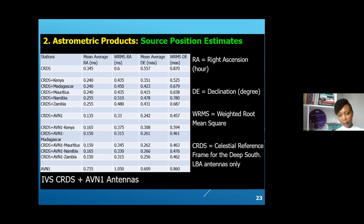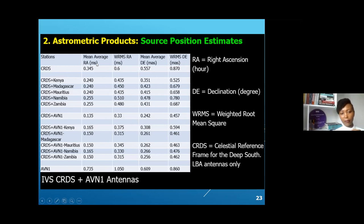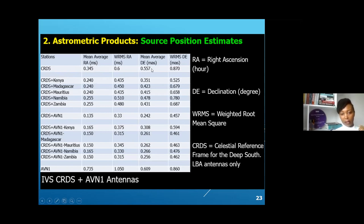The third objective was to estimate source positions, looking at the Southern Hemisphere. We examined the CRDS — the Celestial Reference Frame for the Deep South — observed using the LBA. The mean average errors in RA and declination with CRDS only are 0.345 and 0.57. Adding AVN-1 antennas improves these to 0.135 and 0.242 respectively. Clearly, adding AVN-1 antennas to a session with the LBA greatly improves estimates of source position.